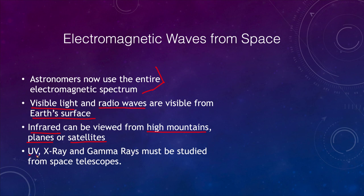Ultraviolet, x-ray, and gamma ray radiation all have to be studied from space — only a small portion of the ultraviolet makes it through to the surface, and little or no x-ray, and none of the gamma ray, makes it down. They require space telescopes to be observed. That's actually a good thing — you don't really want to walk outside and be bombarded by x-rays or gamma rays from space.